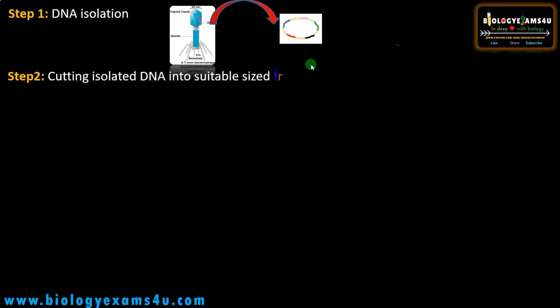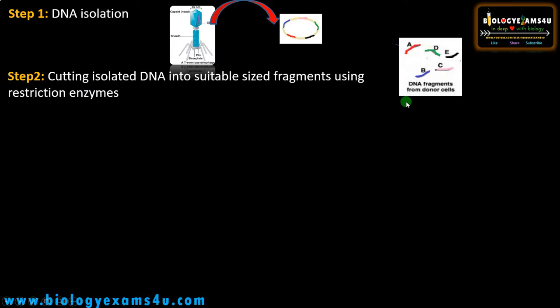Then we need to cut this isolated DNA using a suitable restriction enzyme into suitable-sized fragments. So these are the fragments A, B, C, D, and E — these are the genes of the phage, only five genes.